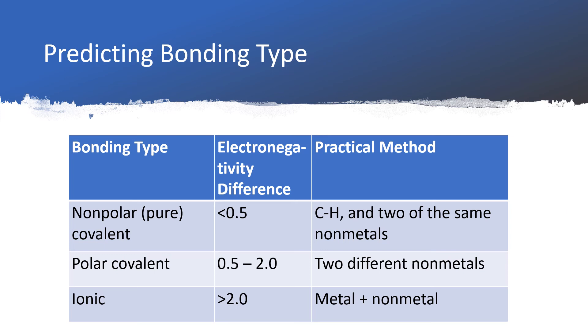Pure covalent bonds are typically formed by carbon bonded to hydrogen, as well as any two of the same nonmetals. So for instance, if an oxygen atom bonds to another oxygen atom. But if you have two different nonmetals bonded to each other, say hydrogen bonded to oxygen, then we're going to have a polar covalent bond.